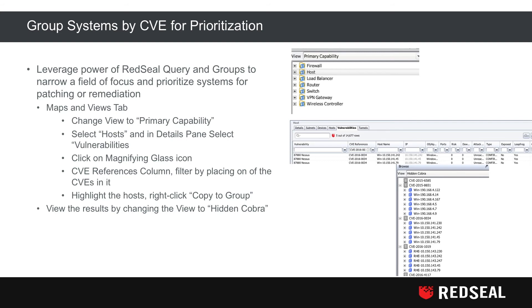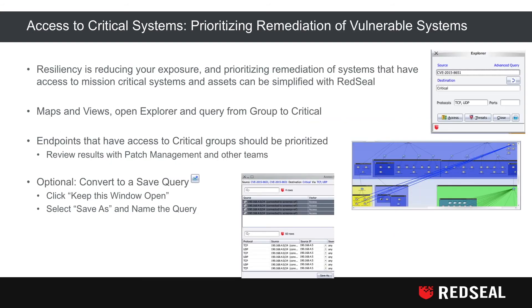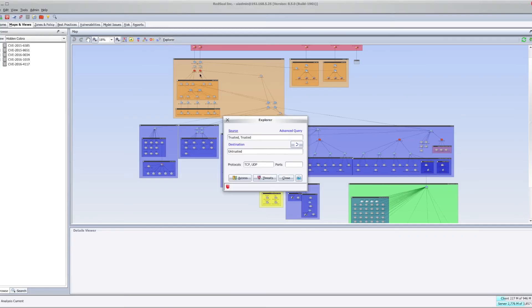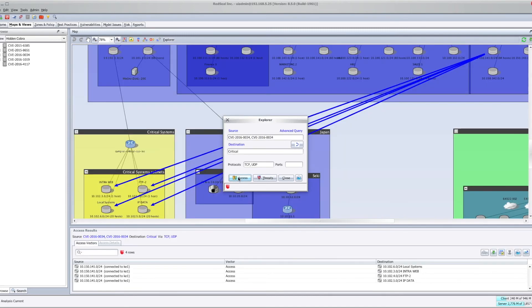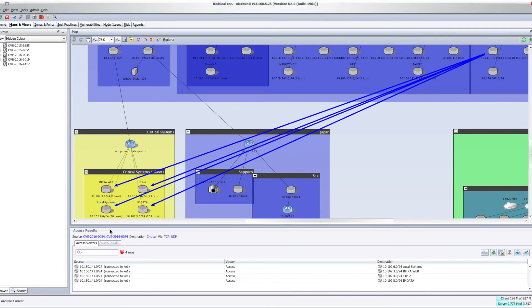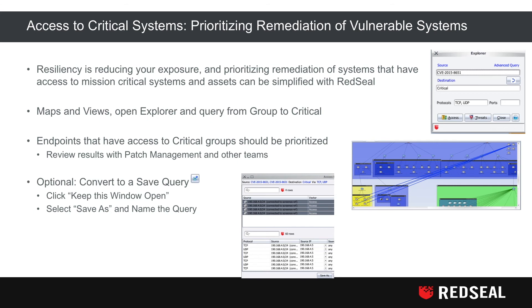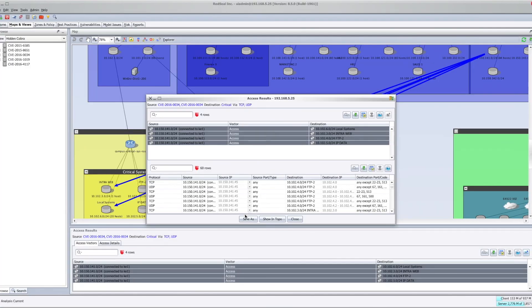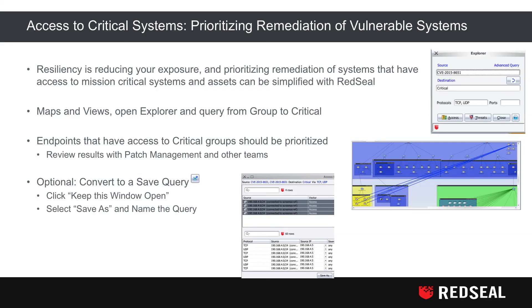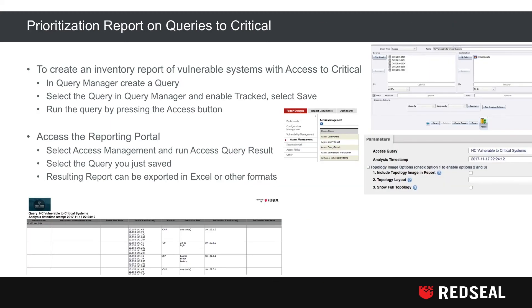Using the pre-work we've done, we can increase our resiliency by reducing exposure and prioritizing remediation of systems that have access to mission-critical assets. In the Maps and Views tab, opening Explorer, create a query from one of your predefined groups to critical endpoints. Systems with access to critical groups should be prioritized and reviewed with your patch management teams. You can convert a query like this to a saved query — click Keep This Window Open, select Save As, and name it something like 'vulnerable to critical.' This allows you to rerun the query until you have managed the campaign to zero.